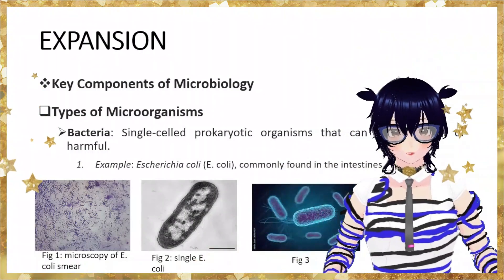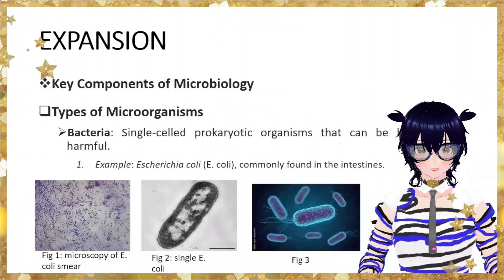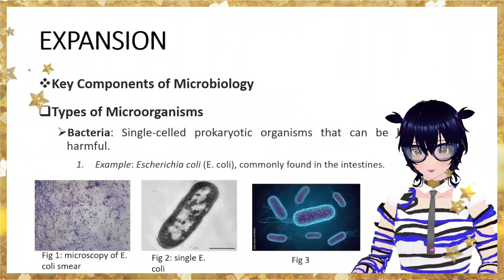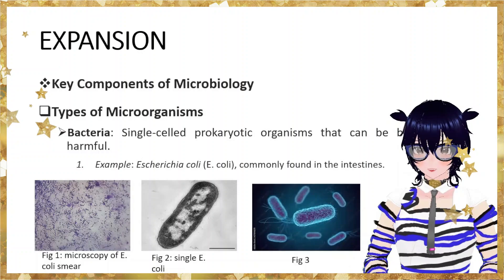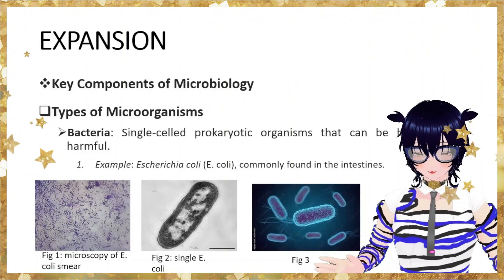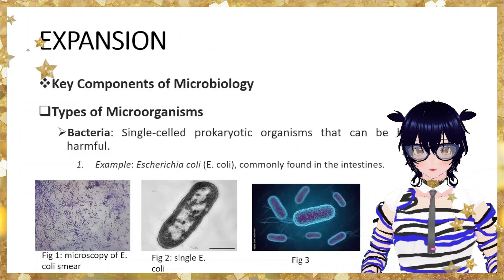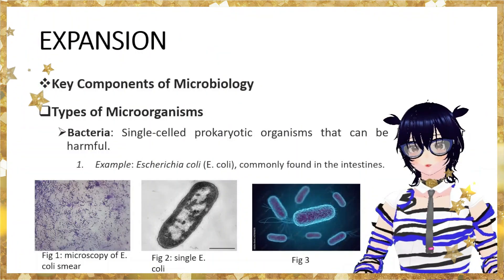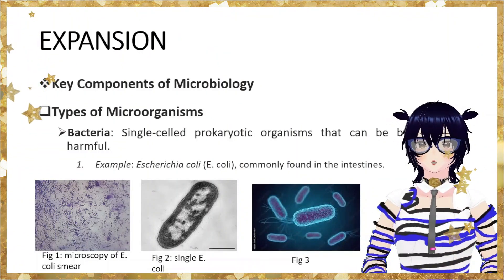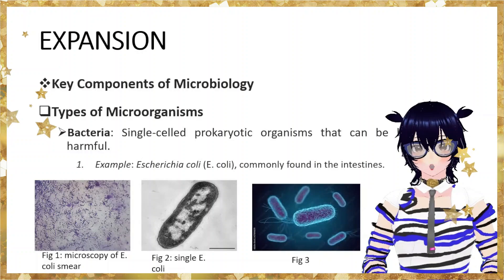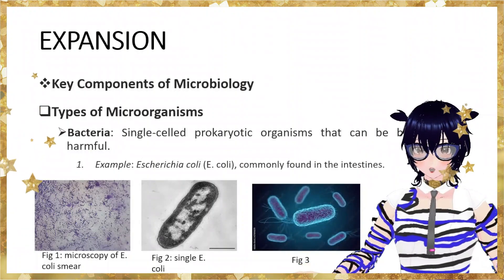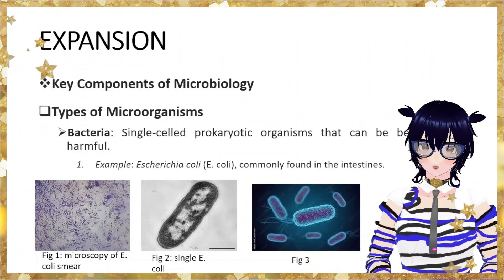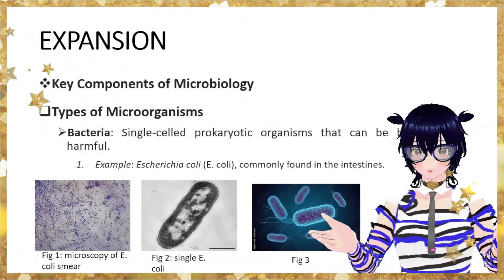Everything you see here has been viewed under a microscope. The first two photographs are actual microscopic pictures, and the other one is an animation showing how E. coli looks. Bacteria come in multiple shapes — they can be spherical and can be comma-shaped.